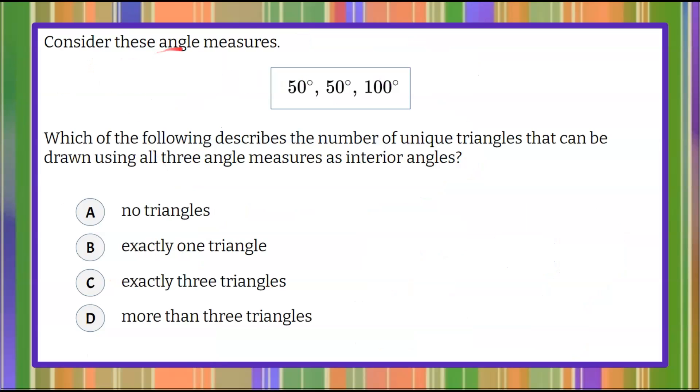We're asked to consider these angle measures: 50 degrees, 50 degrees, and 100 degrees. We're asked which of the following describes the number of unique triangles that can be drawn using all three angle measures as interior angles.